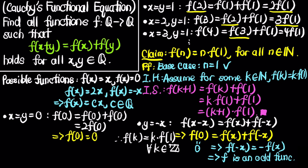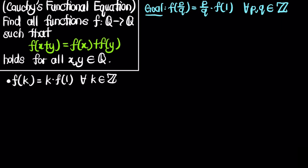So we know f(k) = k·f(1) for all integers k. Now, having handled integer values, we move to rational values. Our goal is to show that f(p/q) = (p/q)·f(1) for all integers p and q. We first restrict to positive rationals, since the oddness of f will then extend the result to all rationals.